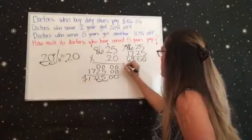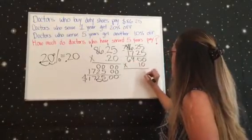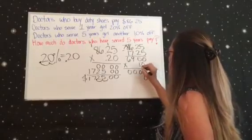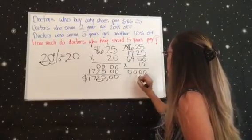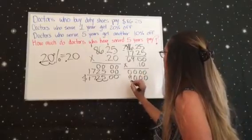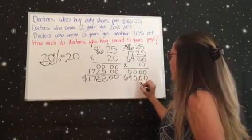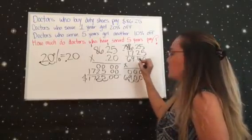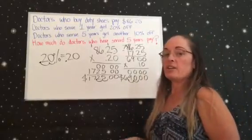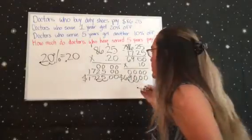We're going to multiply by 0.10. Remember we go down and we go over twice because we had two decimals, and we have $6.90. So $6.90 is 10% of the $69, so we have to subtract that from $69.